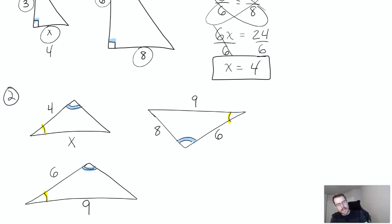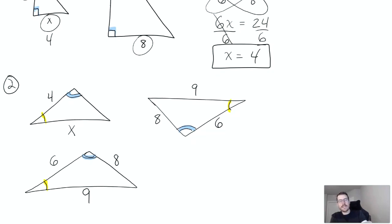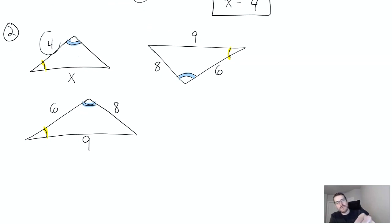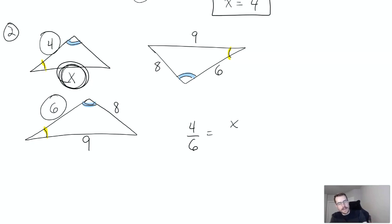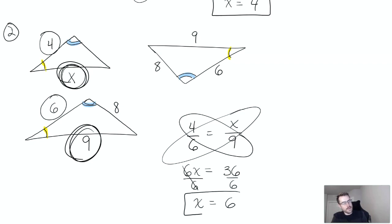Between the yellow and the blue angle was six, so I put six there. The other side of yellow that's not six is nine, so that goes down here. The last side, next to the blue, has to be eight. Now once we have them lined up, it's easy to set up a proportion. Four is to six as x is to nine. Cross multiply: six x equals nine times four, which is 36. Divide by six, so x equals six.